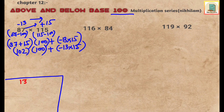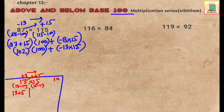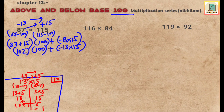For 13 multiplied by 15 using base 10: deviations are 13 minus 10 equals plus 3, and 15 minus 10 equals plus 5. Make a partition: first number plus second deviation is 13 plus 5, and in the second partition multiply the deviations: 3 multiplied by 5. So 13 plus 5 gives 18, and 3 times 5 is 15. Since the base is 10 we need a single digit in the second partition, so the 1 carries over: 18 plus 1 and 5, giving a final answer of 195.